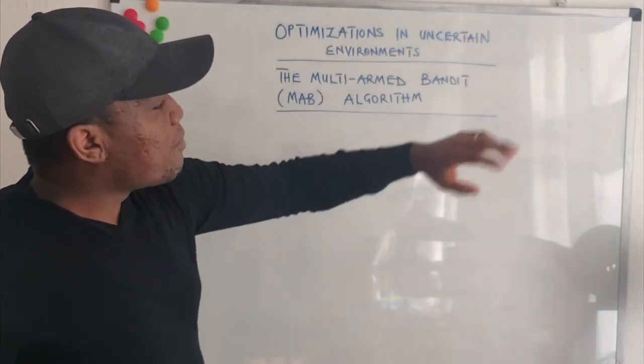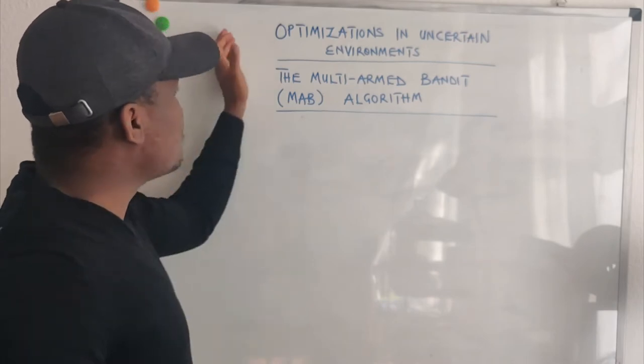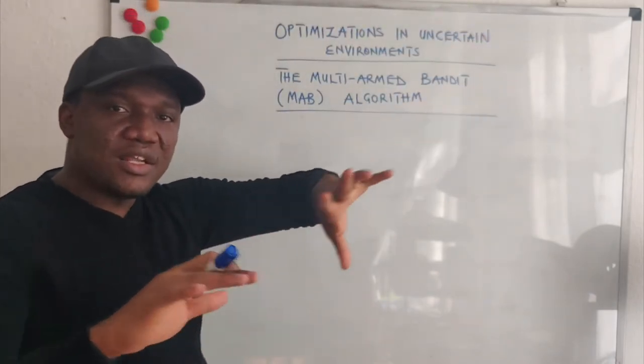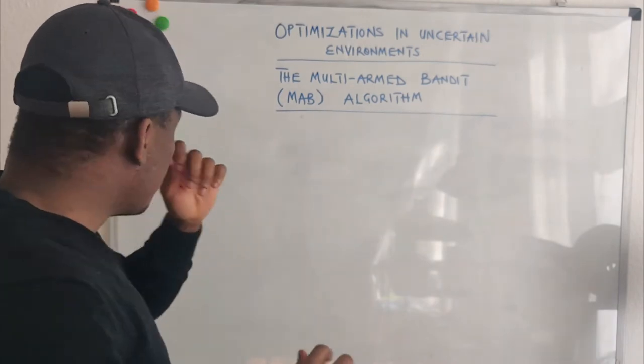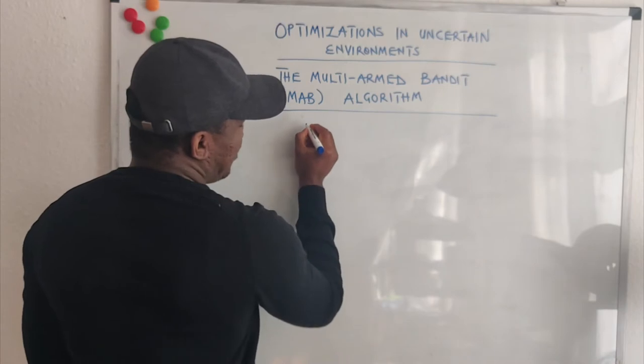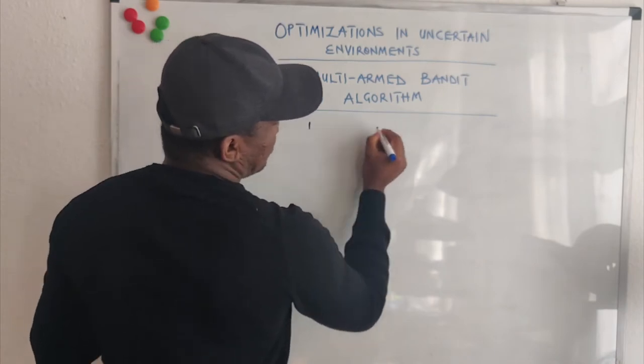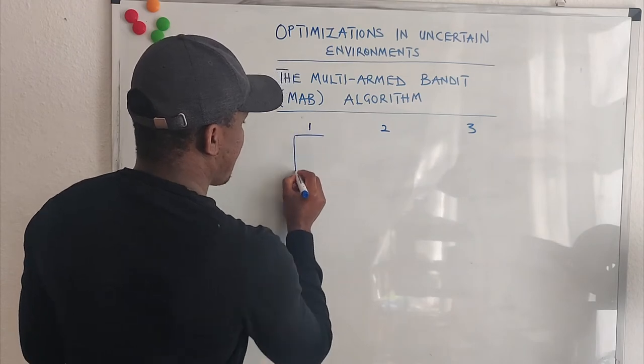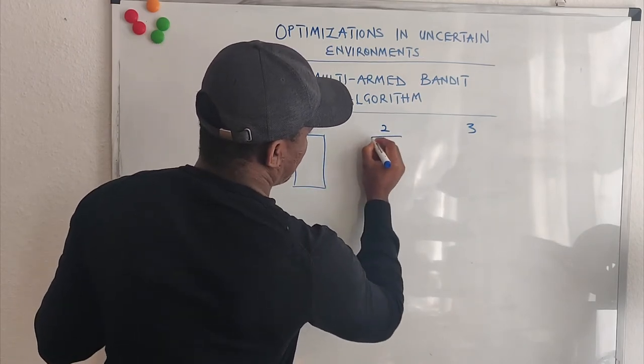What the Multi-Armed Bandit Algorithm helps you to do, as I have summarized up here, is to help you to optimize your actions in uncertain environments. So let me explain it this way. Let's say you have three doors. Door 1, Door 2, Door 3. These are doors.